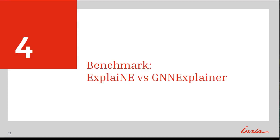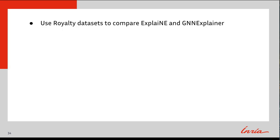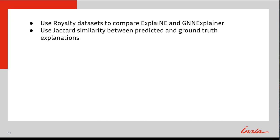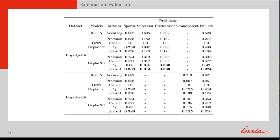We use the royalty datasets to benchmark two state-of-the-art explanation methods, Explaine and GNN Explainer. To measure the quality of explanations from these methods, we use the Jaccard similarity to compare predicted and ground truth explanations. We also report the precision, recall, and F1 score. The results of the benchmark can be seen in this table. The top row shows link prediction performance on the RGCN. We show performance on subsets of the data using only one predicate and on the full dataset. For example, on the has-spouse subset, Explaine has a Jaccard score of 0.388. We find that on all subsets, Explaine outperformed GNN Explainer in terms of the Jaccard score.